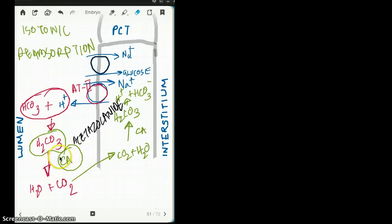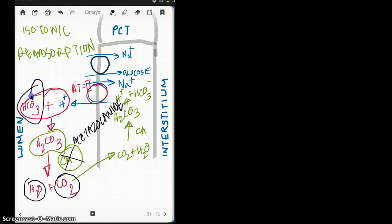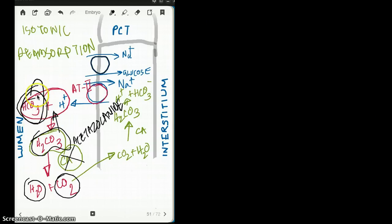If we block carbonic anhydrase, it cannot convert H2CO3 into water and carbon dioxide, so we are left with H2CO3. You might wonder: how does this cause metabolic alkalosis when we're left with H2CO3? The answer is that bicarbonate is a stronger base than H2CO3. H2CO3 is a very weak acid, but bicarbonate is a stronger base, so by equilibrium, this reaction goes backwards to form HCO3⁻ (bicarbonate).